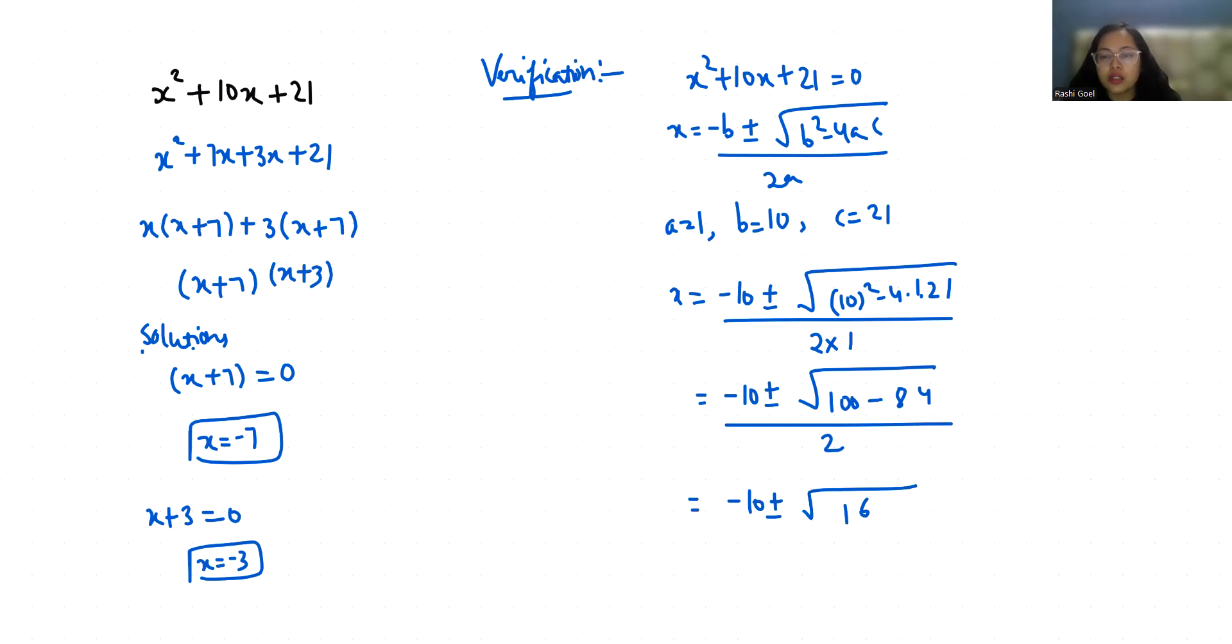So x₁ = (-10 + 4) / 2, that is -6 / 2. So x₁ = -3. Now x₂ = (-10 - 4) / 2, -14 / 2. So x₂ = -7.